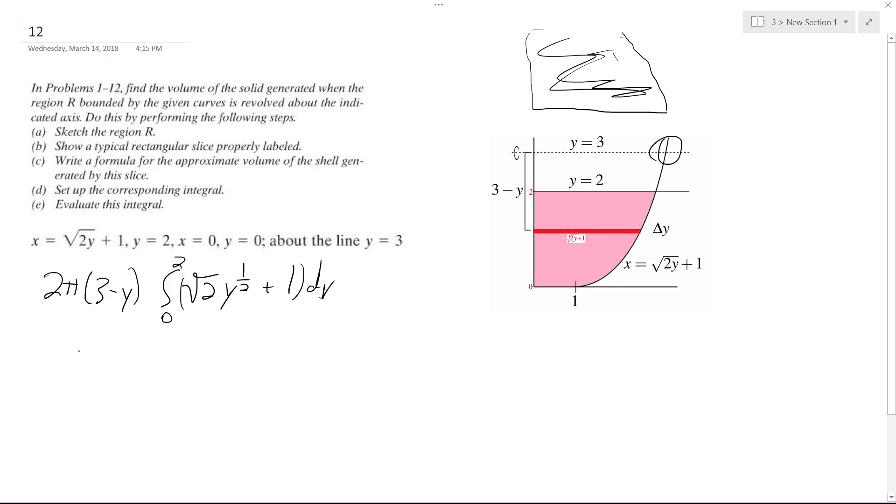All right, so I'm going to distribute the 3 minus y. So what we end up with is 2 pi, from 0 to 2. After you multiply everything out, it's going to be 3 plus 3 square root 2 times y raised to the 1 half minus y minus square root 2 times y raised to the 3 halves, quantity dy.